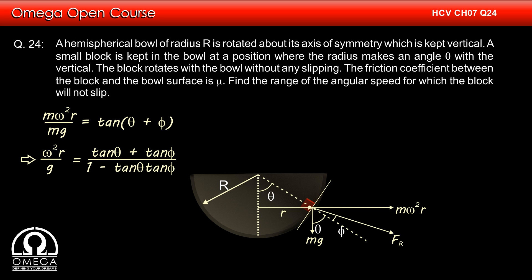This implies omega squared r divided by g equals tan theta plus tan phi divided by 1 minus tan theta tan phi, or omega squared equals g tan theta plus tan phi divided by r into 1 minus tan theta tan phi.